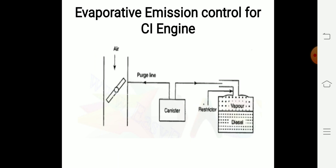The canister absorbs the diesel vapor. So once the engine needs more air fuel mixture, at that time the diesel vapor enters the engine and complete combustion occurs. By using this, we can control the automobile engine emission. Thank you.